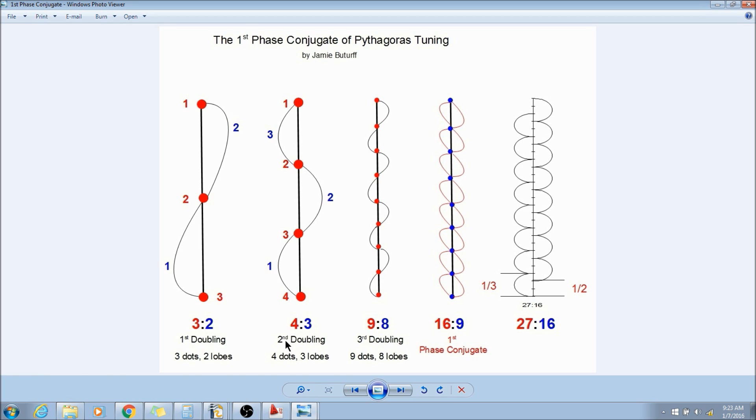When you draw three dots, it gives you two lobes, so there's the three to two. We go to the next, the second doubling, the four to three ratio. I drew four dots and that gives us three lobes. We go on to the third doubling. We get nine to eight ratio, so I drew nine dots and that gives us eight lobes.